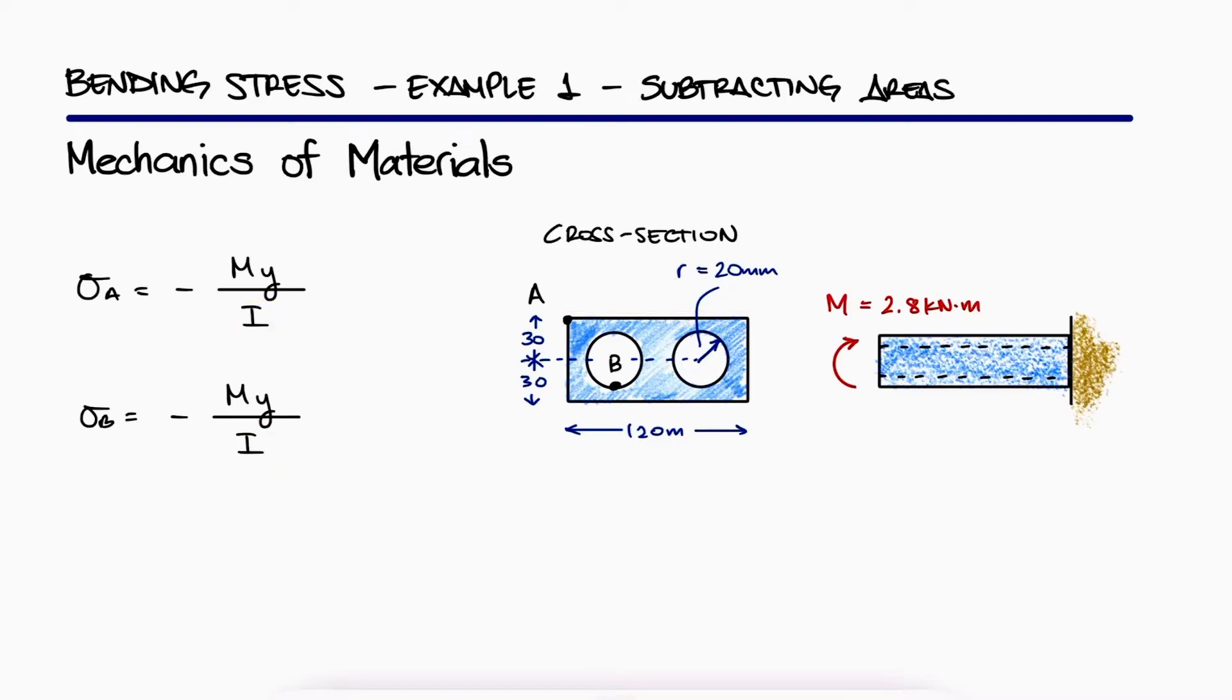For both, we need to find the location of the neutral axis. But since the cross section is symmetric, finding the centroid of the entire area, which is effectively finding the neutral axis, would involve a procedure where we use the centroid location of all three simpler shapes.